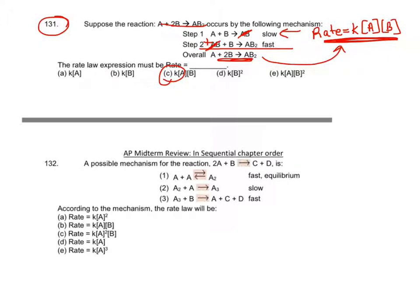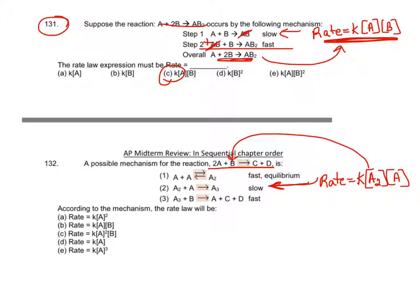Let's look at a second example. I give you the overall reaction and a possible mechanism, and I want to know the rate law. The rate law is based on the slow step, so the rate law of the slow step would be rate equals k times [A₂]^1 times [A]. But A₂ is not in the overall reaction — the overall reactants are A and B. A₂ is an intermediate; it would be hard to measure in the lab. So you want to make sure your rate law is in terms of the reactants that appear in the overall reaction.